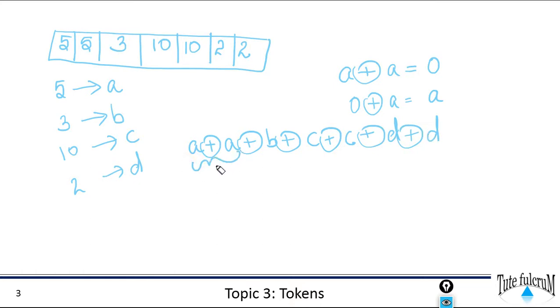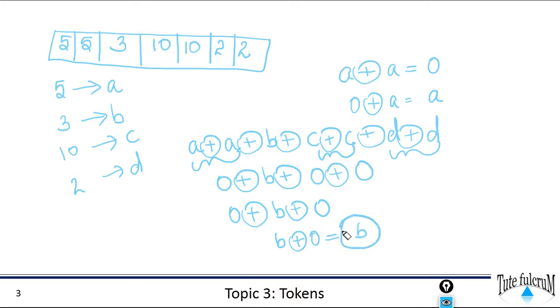So A XOR A will give you 0. So you could write this as 0 XOR B XOR again C XOR C is 0. 0 XOR again D XOR D is 0. And again, this becomes 0 XOR B XOR 0 XOR 0. And 0 XOR B is what? B. XOR 0, your result is B. So this B was repeating odd number of times. So our problem is efficiently solved by just doing XOR of all numbers.